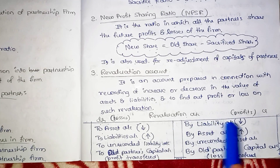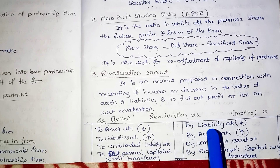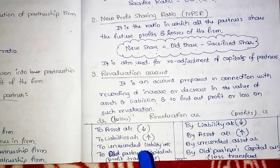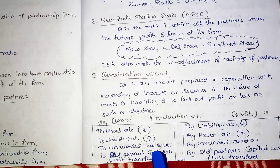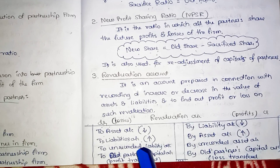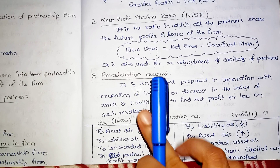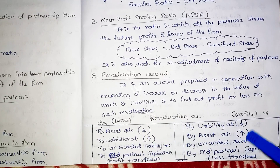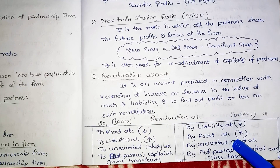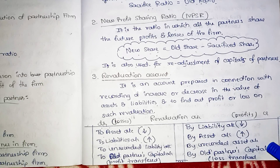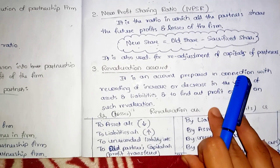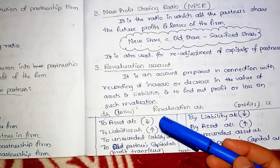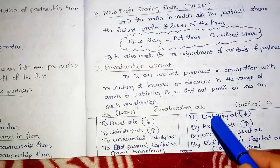After finding the balance in the Revaluation Account, profit or loss is transferred to old partners in the old ratio. If there is a profit, it is transferred to the credit side of partners' capital accounts. If there is a loss, it is transferred to the debit side. You will also need to know the journal entry for this.